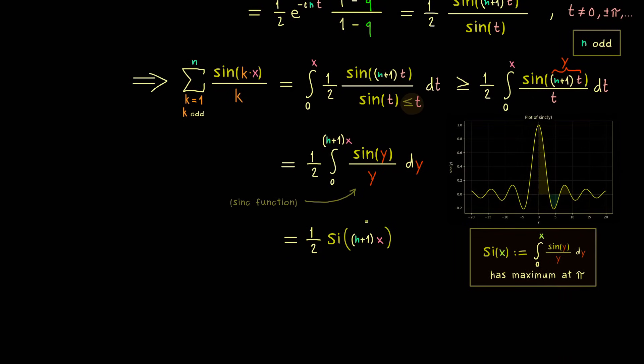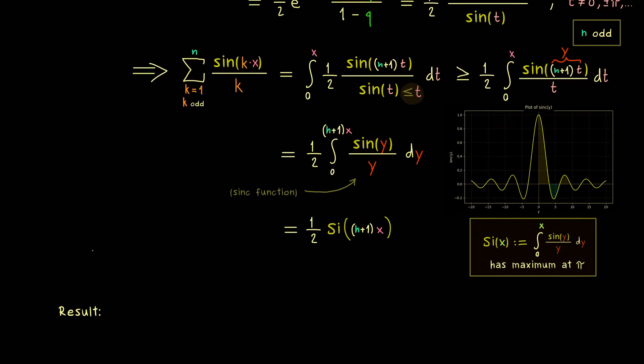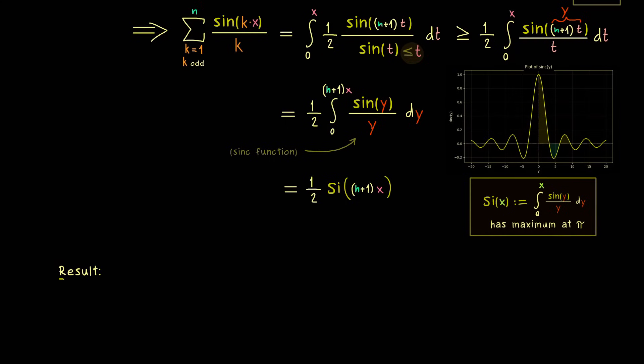Hence, exactly at this point we have the strongest estimate for our sum. And since this sum is used in our Fourier approximation, we have the estimate as wanted. More precisely, we look at our Fourier series f_n f at the point π divided by n plus 1. So you already see, the larger this n is, the closer we are at the origin.